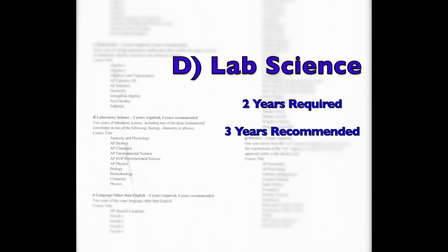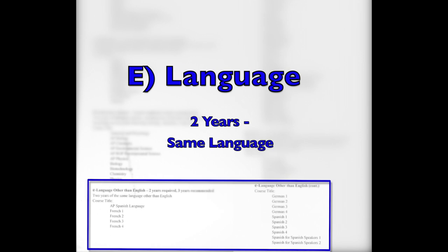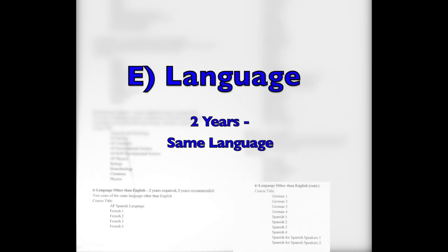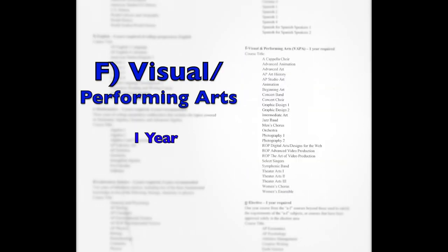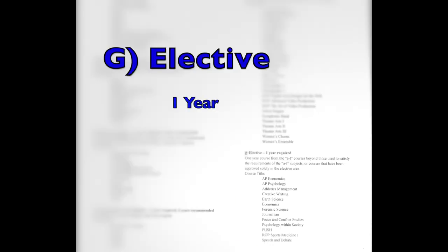D is a laboratory science, so two years required, three years recommended. E is language other than English, so two years in the same language. Visual and Performing Arts, one year. G section is one year of an elective.